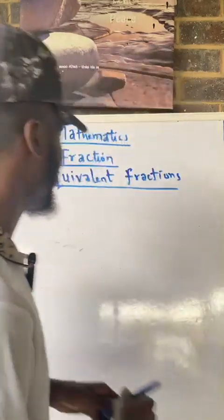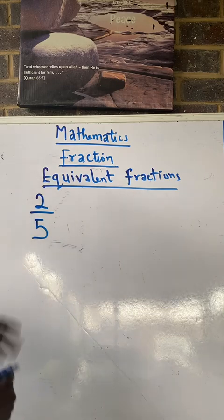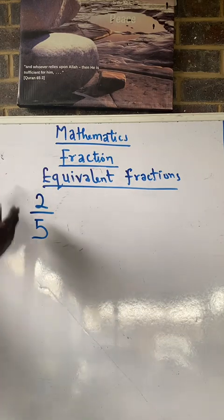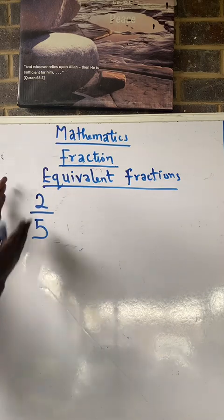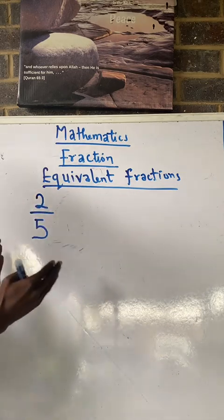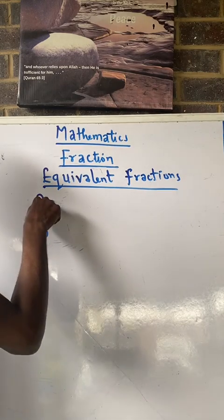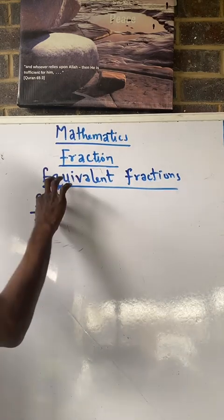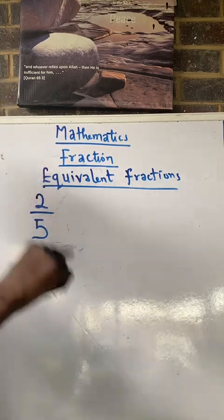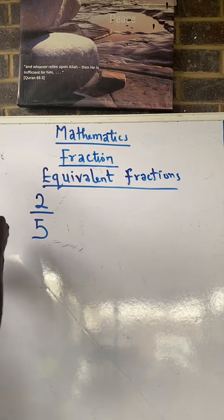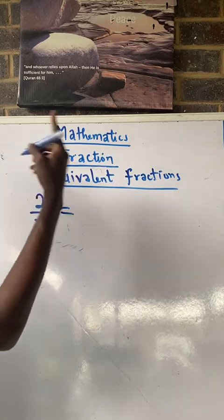Let's see an example. If we have two over five, two over five is a fraction. What are the fractions that are equivalent to it? We have millions of fractions that can be equivalent to this. How do we get that? If you multiply the top and the bottom by the same thing, or you divide by the same thing, you will still get an equivalent fraction. For instance, if we multiply the top by two and the bottom by two.